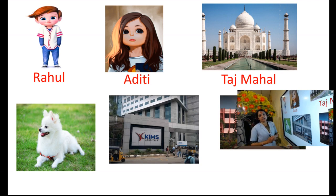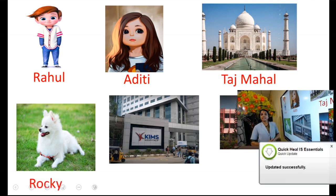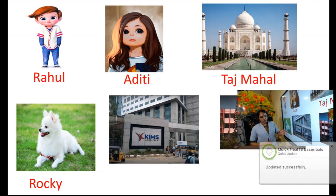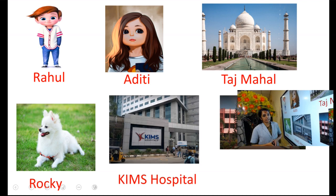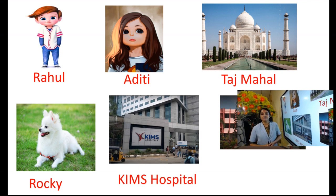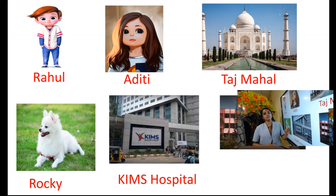Here we have a dog. If I say a dog, it's a common noun. But if I say Rocky, then Rocky is the name given to that particular animal, so Rocky is a proper noun — a special name. Here we have a hospital. If we say hospital, it is a common noun. But if we say Kames Hospital, it is the name of this particular hospital, so then it is a proper noun. If we simply say hospital it is common noun, but if we particularly mention the name, it becomes a proper noun.